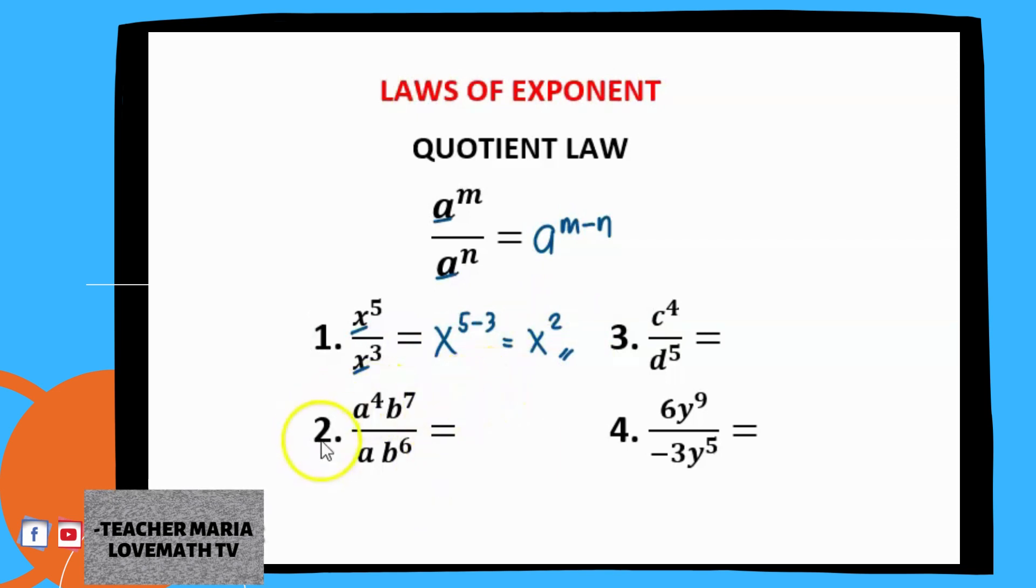For number 2, we have a raised to 4, b raised to 7, divided by a, b raised to 6. Since we have two variables here, we are just going to have it one by one. So let's focus with the first variable a. a raised to 4 divided by a.